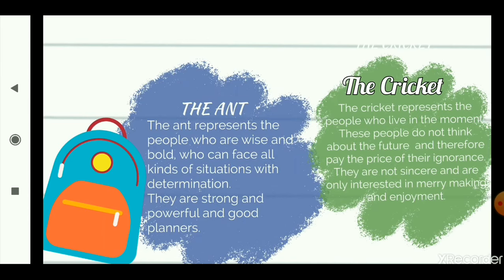They are strong, powerful and good planners — they plan in advance, so that's why they get good results. The cricket, on the other hand, represents people who live in the moment. These are people who are happy in the moment, don't think about the future, just relax and chill around, do not work for the future. These people do not think about the future and therefore pay the price of their ignorance because they waste time. The time wasted never comes back. They are not sincere and are only interested in merrymaking and enjoyment.